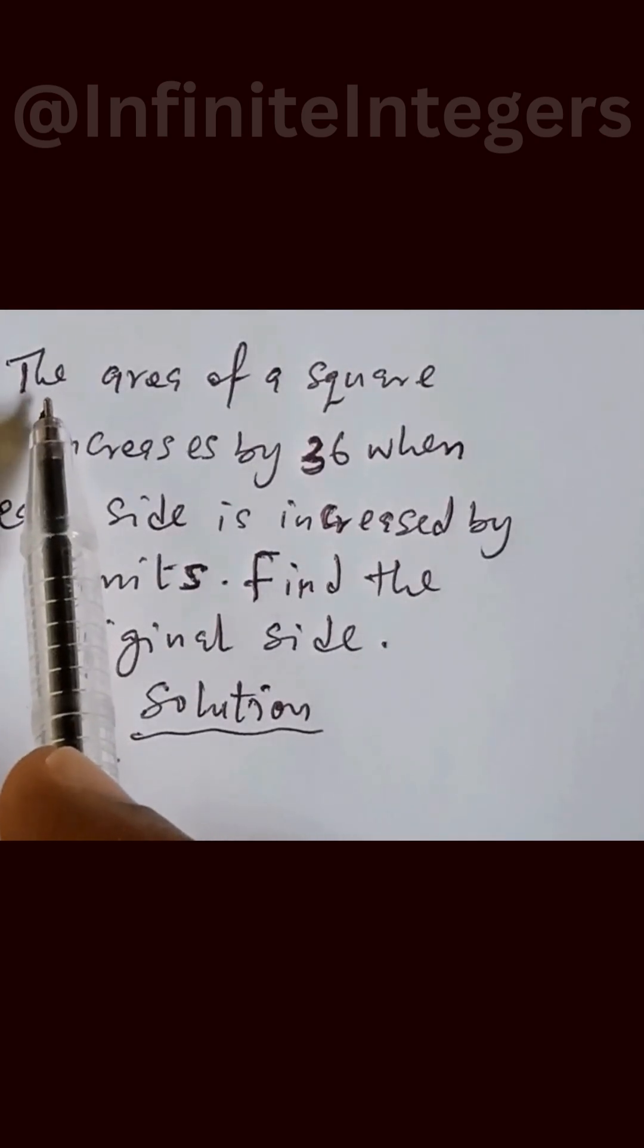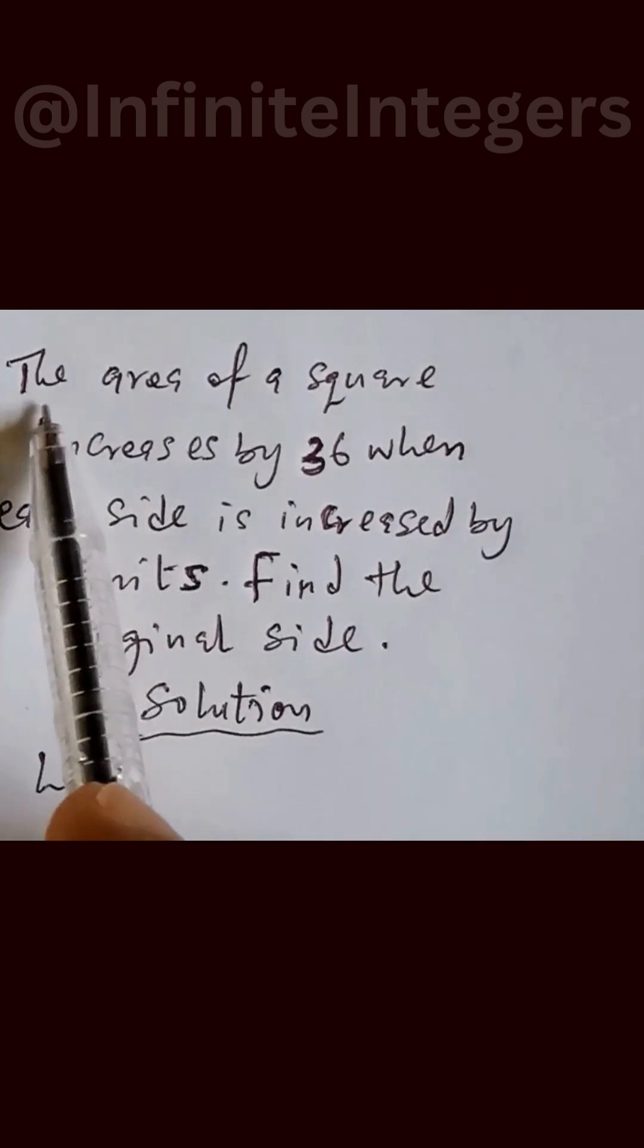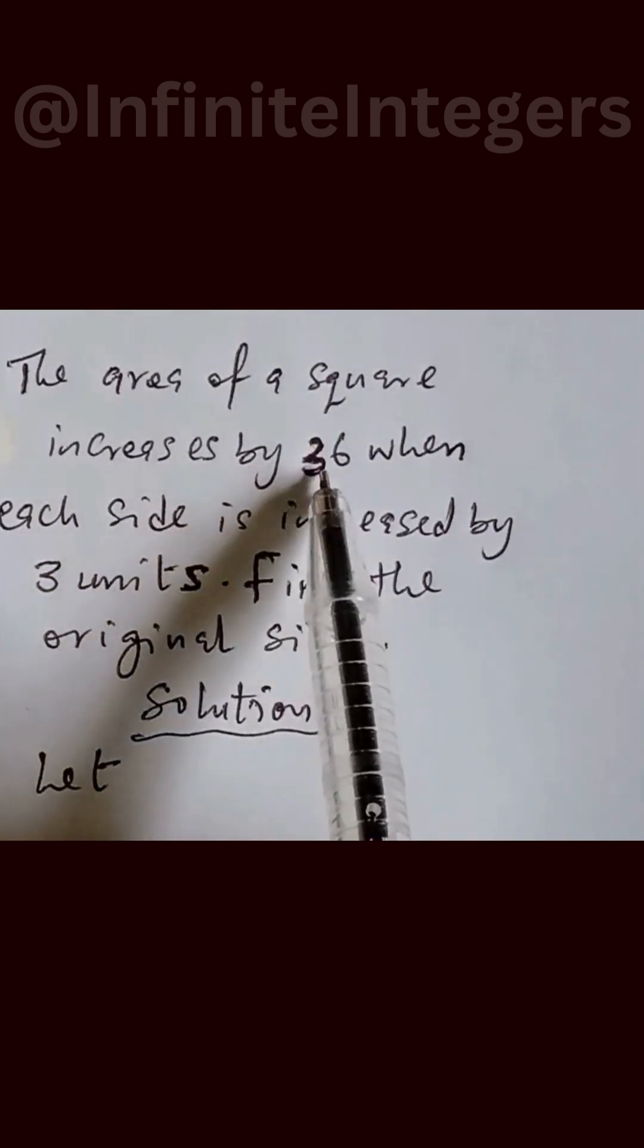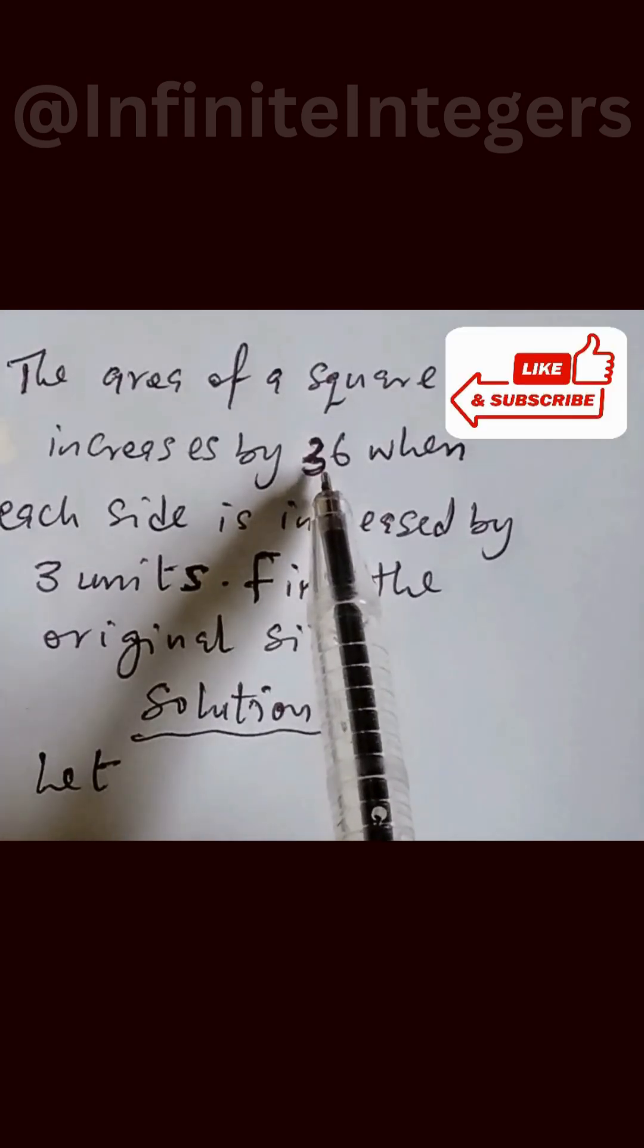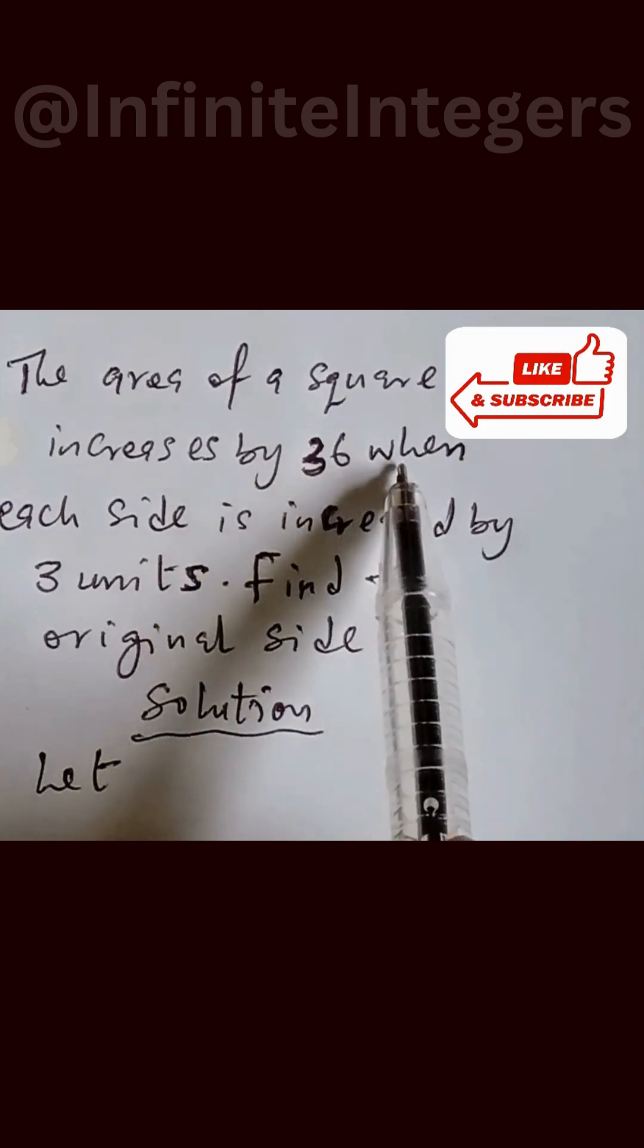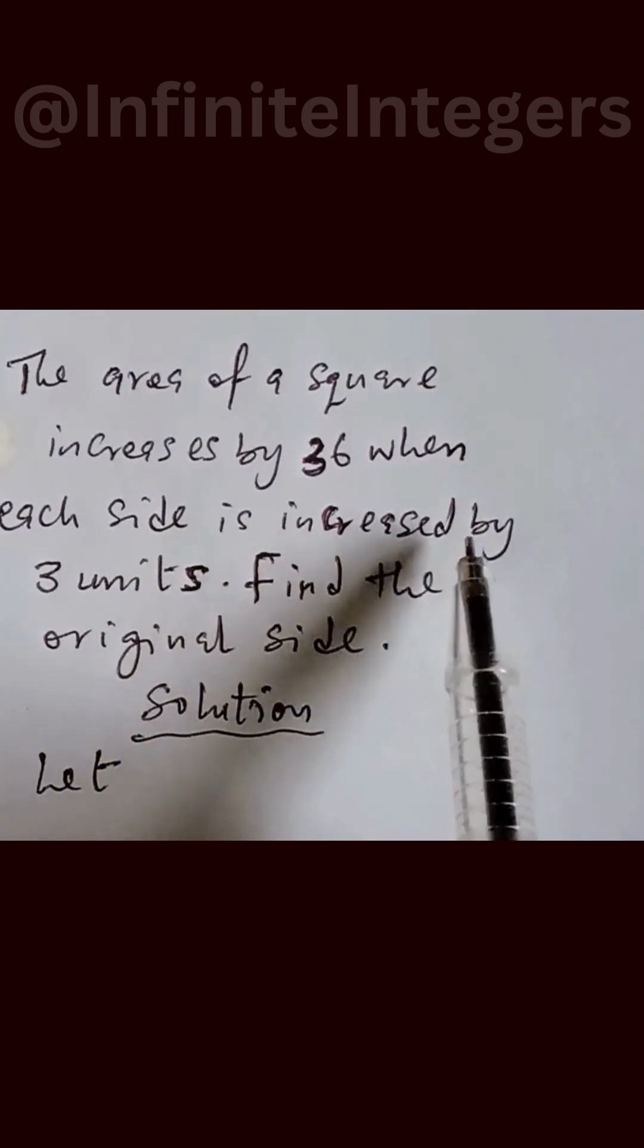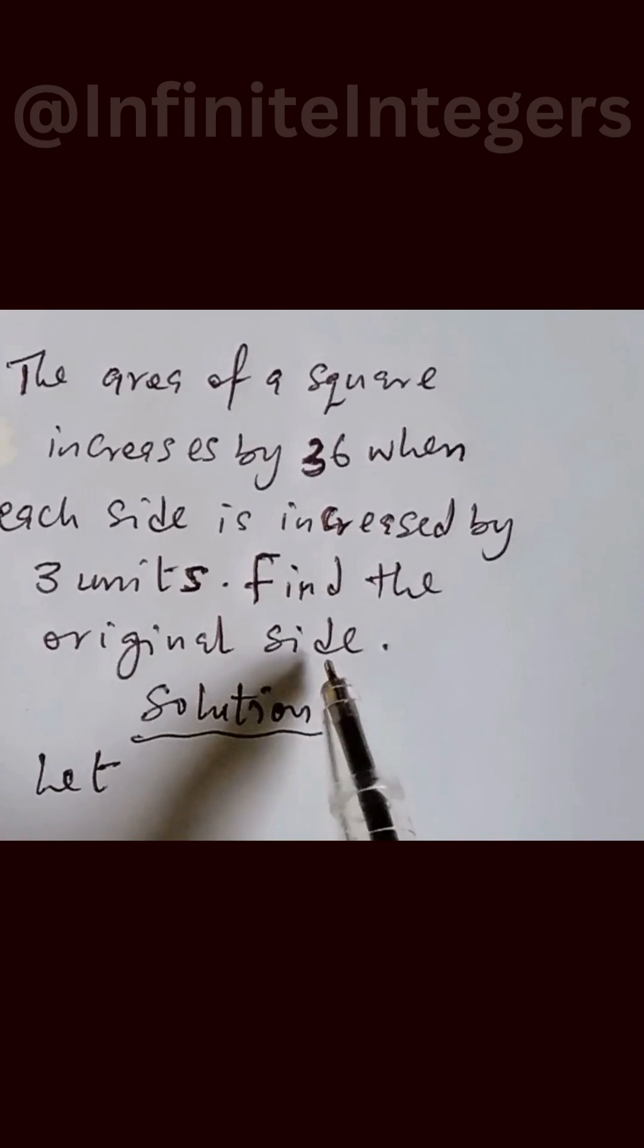Here we are asked to solve this challenge: the area of a square increases by 36 when each side is increased by 3 units. Find the original side.